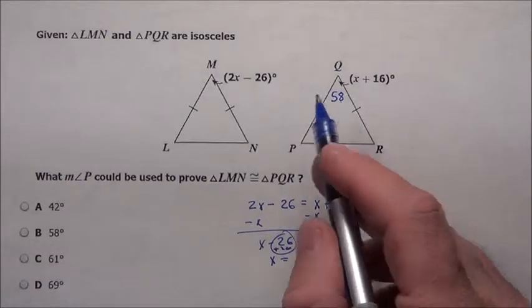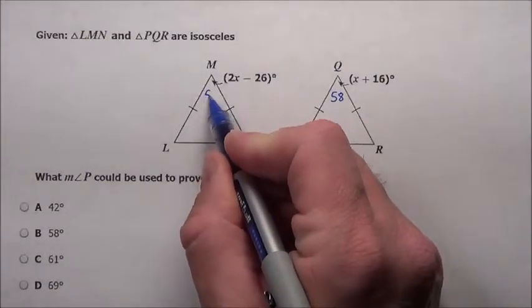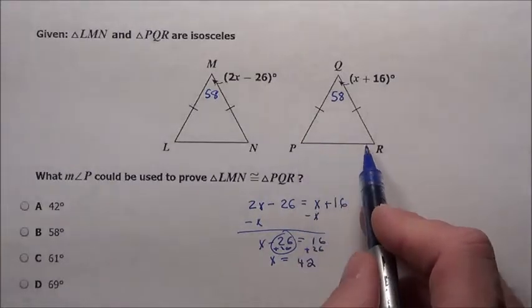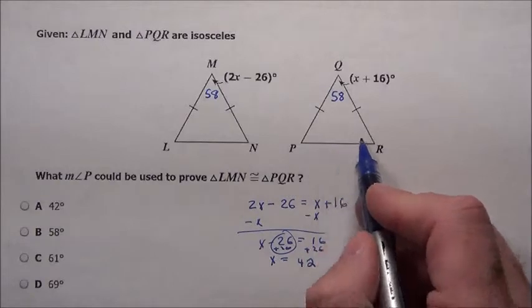So we know this corner is going to be 58, and over here if we plug it in, we're going to get 58 also. Now remember, this angle and this angle are exactly the same. So how much is still left?